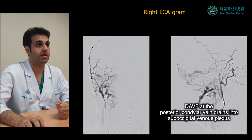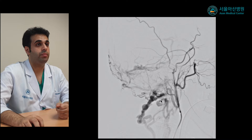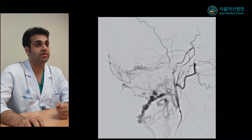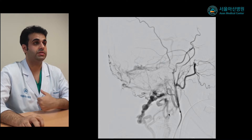Another dural AV fistula is located at the posterior condylar vein at the level of the skull base, which is supplied by the proximal occipital artery branches and ascending pharyngeal artery branches, with drainage through the suboccipital paravertebral venous plexus.